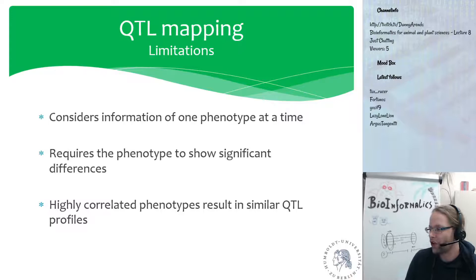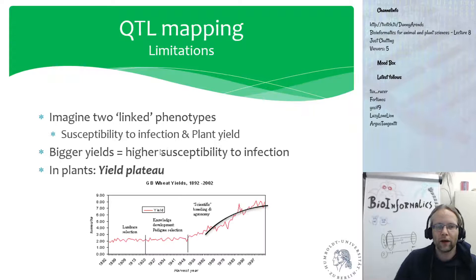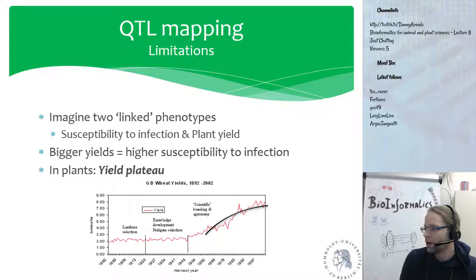If a phenotype doesn't show a lot of significant differences, it might still be that combined with another phenotype you could find a regulator or locus controlling your phenotype. In plants, it's very common that susceptibility to infection and yield are highly correlated with each other — if you improve the yield, the plant becomes more susceptible to infection. Bigger yield means higher susceptibility, and in plants we call this the yield plateau.